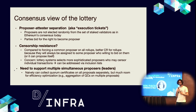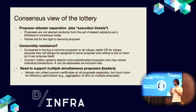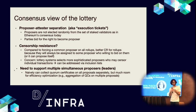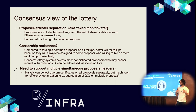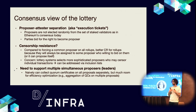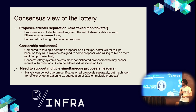This leads to some observations about censorship resistance. Compared to forcing a common proposer on all rollups, it's better for censorship resistance because rollups will always be assigned to some proposer willing to bid on them, and as a default they can propose themselves. One concern is that lottery systems select more sophisticated proposers who may then censor individual transactions, but this can be addressed via inclusion lists. This also requires support for multiple simultaneous proposers or leaders in consensus — naively done by collecting quorum certificates on all proposals separately, though there's room for efficiency optimization, such as aggregating quorum certificates across multiple proposals.